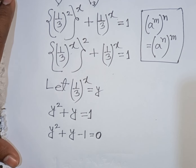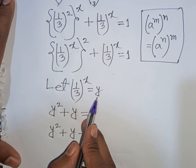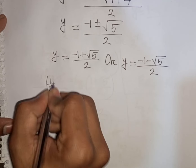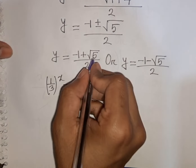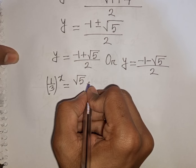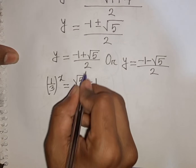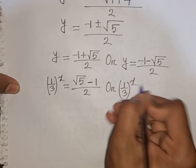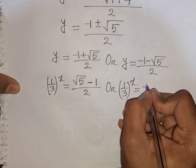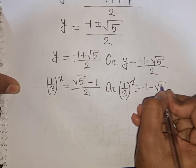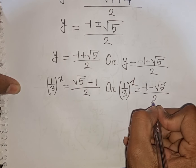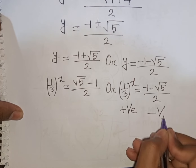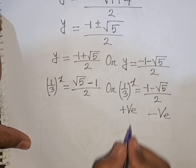Recall that y = (1/3)^x, which is always positive for any real x. The second case gives a negative value, so positive cannot equal negative — this case is rejected.